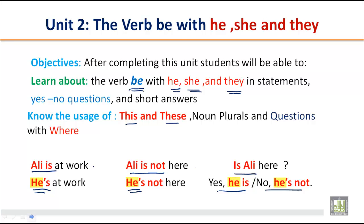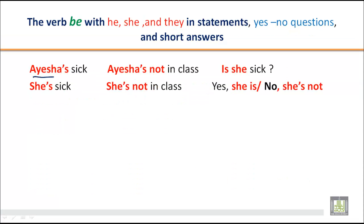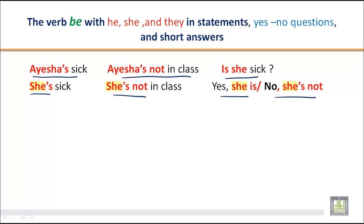Let's do some more practice with 'she'. We say: Aisha is sick. Aisha is not in class. If we have to say something more about Aisha, we use 'she' instead of repeating her name. She is sick. She is not in class. And if we ask the question: Is she sick? Yes, she is. No, she is not.